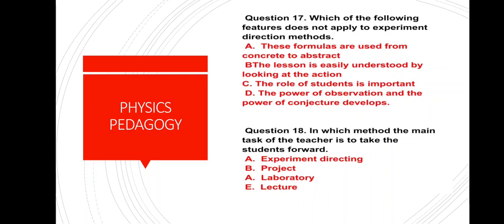Question number 17: Which of the following features does not apply to the experiment direction method, also known as the lecture-cum-demonstration method? Options: goes from concrete to abstract; lessons are easily understood by observation; the role of student is important; develops power of observation. The correct answer is option C — the role of student is important. In this method, the role of the teacher is most important.